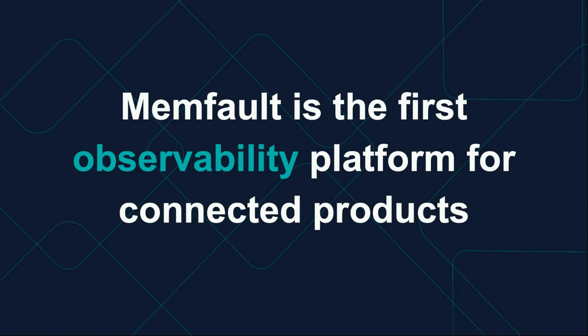Maybe the issue isn't even user-facing yet. Maybe you have a symptom that will eventually lead to a problem, and observability helps you detect it early — things like battery degradation across the fleet, losing a few hours of battery life per release because you're using more CPU time, or an increase in crash frequency when connected to a certain network.